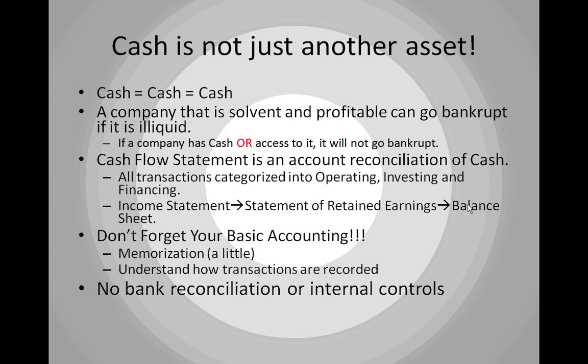A few things to remember: there's some additional memorization on top of what you've already done. Don't forget your basic accounting — in order to break down transactions into the appropriate categories, you need to remember how they were originally recorded. Go back and understand the original transaction and how it was recorded; that will help you categorize items properly for the statement of cash flows. In this textbook, we're not going to do a bank reconciliation or study internal controls — that was covered in the free Business Math and Financial Literacy textbook, and I'll post a link to that material.